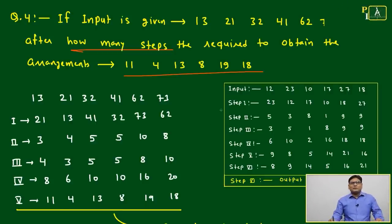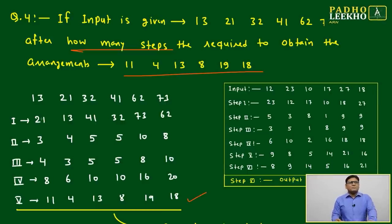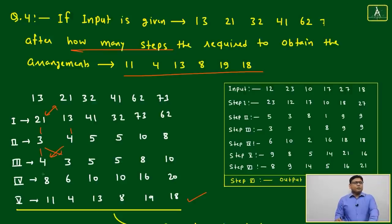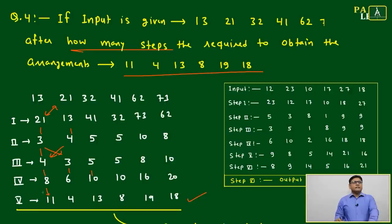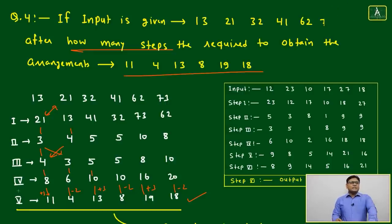We keep applying the steps one by one to the input 13, 21, 32... checking after each step which arrangement we arrive at. After Step 5 — interchanging, sum of digits, interchanging, doubling, +3/-2 alternately — we get 11, 4, 13, 8, 19, 8. This matches the target output, so 5 steps are needed.